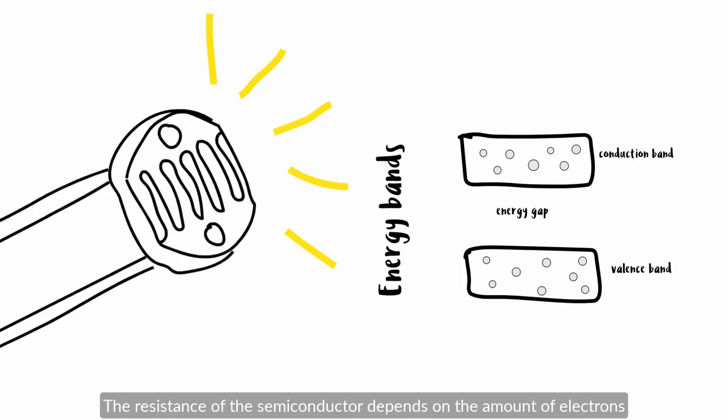The resistance of the semiconductor depends on the amount of electrons available in the conduction band to carry electricity.